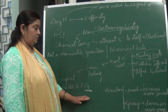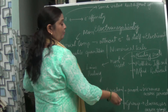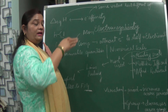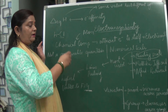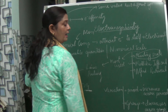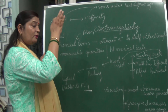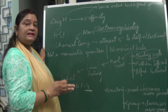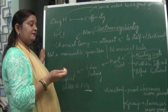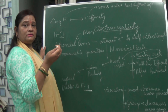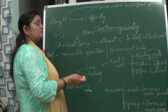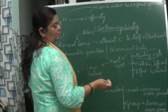Electronegativity increases across the period from left to right. For example, chlorine is more electronegative than sodium because it needs only one more electron to complete its shell. Down the group, electronegativity decreases. From sodium to cesium in group 1, it goes on decreasing because the effective nuclear charge decreases and the atomic size increases. As the atomic size of cesium is much larger than sodium, the tendency to attract electrons decreases as we go down the group.